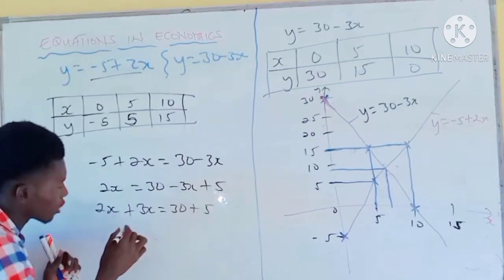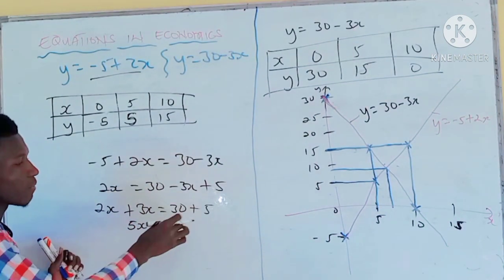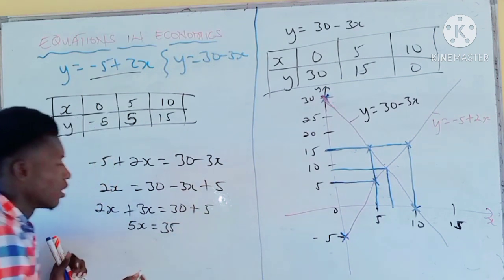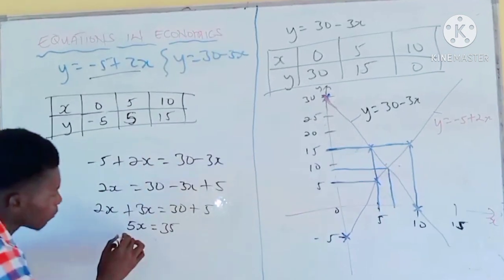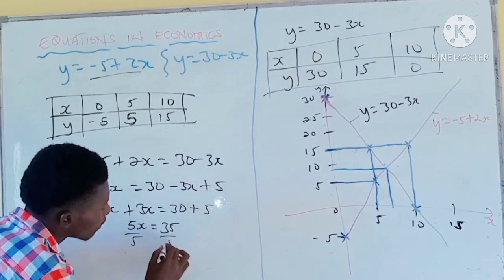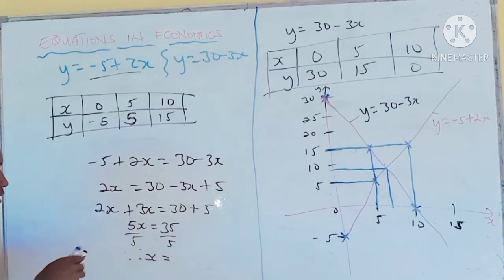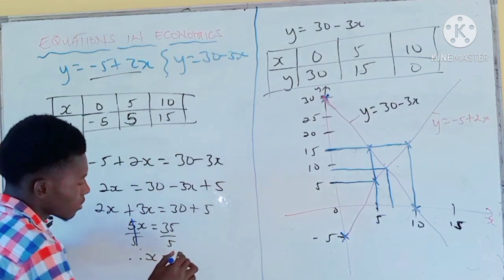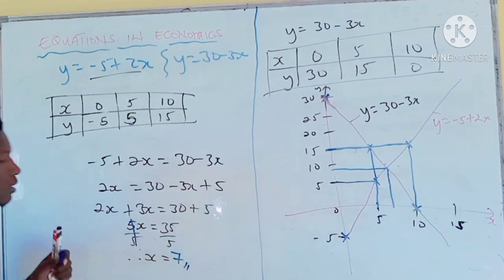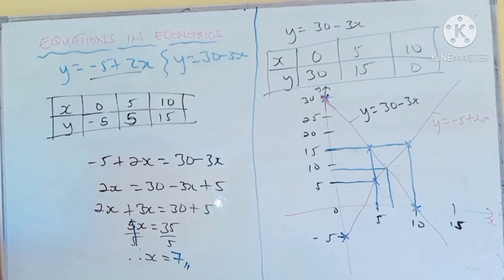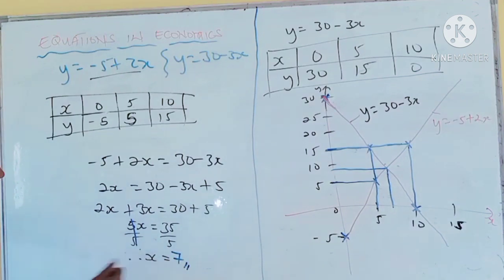2 plus 3 gives 5x. And 30 plus 5 is 35. So 5x equals 35. Divide both sides by 5 — the x cancels on the left. 35 divided by 5 is 7. Therefore, x equals 7.